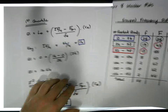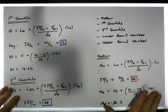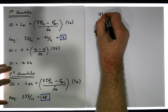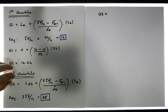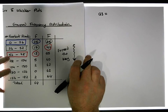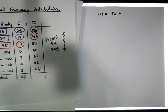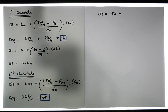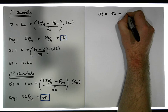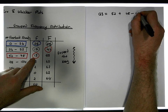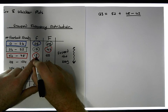Let's do the calculation. Q3 is equal to the lower bound of that particular class, which is 52, plus 3 times sigma f over 4 — which equals 48 — minus the cumulative frequency of the class before, which is 42, and that needs to be divided by the actual frequency of the class, which is 13.